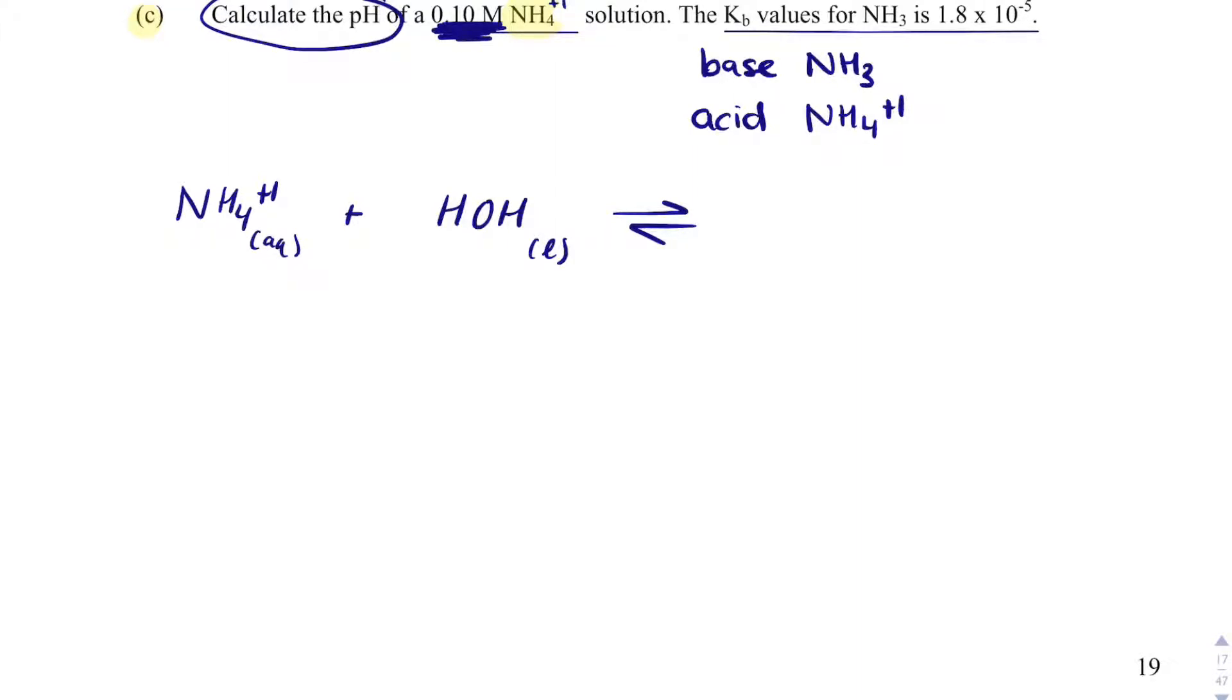So what I'm going to do is I'm going to take NH4 plus 1 plus water. And the reason I'm doing this is because my initial concentration is for NH4 plus 1, and not for NH3. So because this is an acid, it's going to lose an H, and I'm going to get its conjugate base, which is NH3. And then I'm going to end up with H3O plus 1.